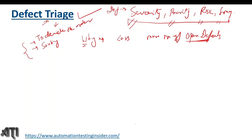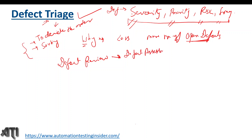Now let's talk about the process of defect triage. There are three stages: first is defect review, second is defect assessment, and third is defect assignment.